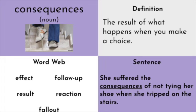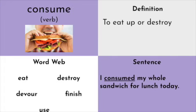Moving into our next word: consequences. This is a plural noun. A consequence is the result of what happens when you make a choice. Typically consequences are associated with bad things, but a consequence can be a good thing too. Usually when consequence is used in English, it's an effect or a follow-up of a poor choice — like when you're a little kid and you go to timeout, that's a consequence of making a poor choice. Word web words: effect, follow-up, result, reaction, or fallout. Our sentence: she suffered the consequences of not tying her shoe when she tripped on the stairs. If you think of cause and effect, the effect is a consequence.